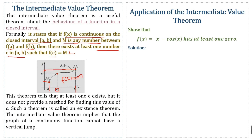This theorem tells us that at least one c exists, but does not provide a method for finding the value of c. Such a theorem is called an existence theorem. The Intermediate Value Theorem implies that the graph of a continuous function cannot have a vertical jump.